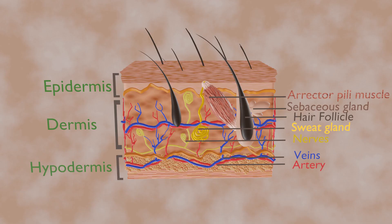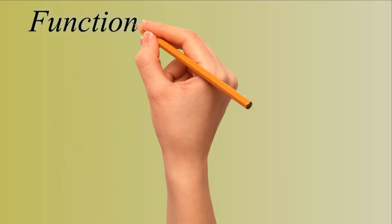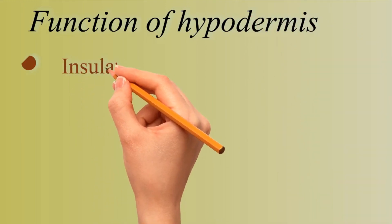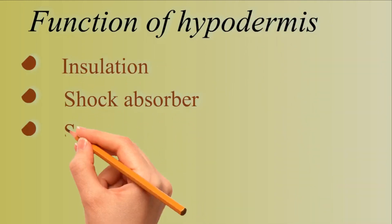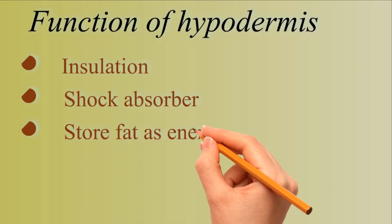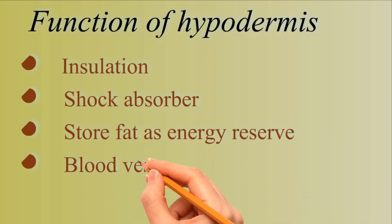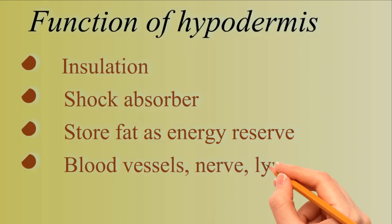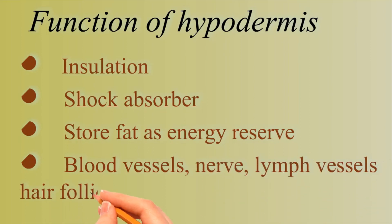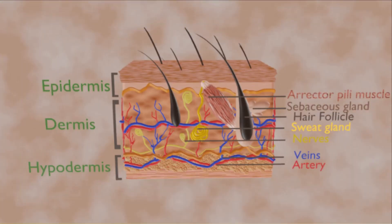The subcutis is the innermost layer of the skin and consists of a network of fat and collagen cells. The subcutis is also known as the hypodermis. The function of hypodermis is as insulator, conserving the body's heat, and as a shock absorber, protecting the inner organs. It also stores fat as an energy reserve for the body. The blood vessels, nerves, lymph vessels, and hair follicles also cross through this layer. The thickness of the subcutis layer varies throughout the body and from person to person.